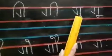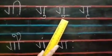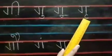Ga plus U equals Gu. Ga plus U equals Gu. Ga plus long U equals Guru.